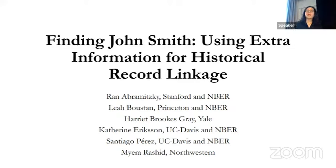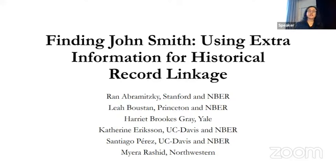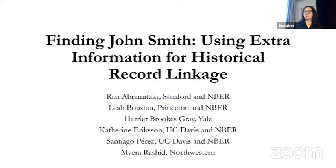Thanks, everyone. This is going to be a methods paper about how best to link individuals across historical census records. The specific question in the paper is whether it's possible to use pieces of extra information about an individual to break ties that occur regularly due to common names — that's why the paper is entitled 'Finding John Smith.' Is it possible for us to create accurate links for individuals who have common names, thereby increasing match rates and sample sizes?